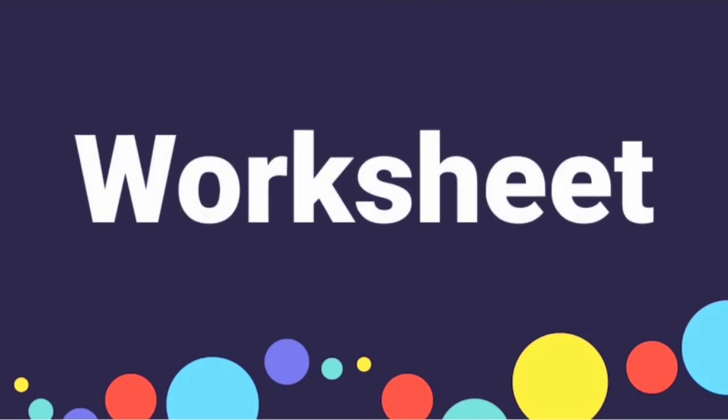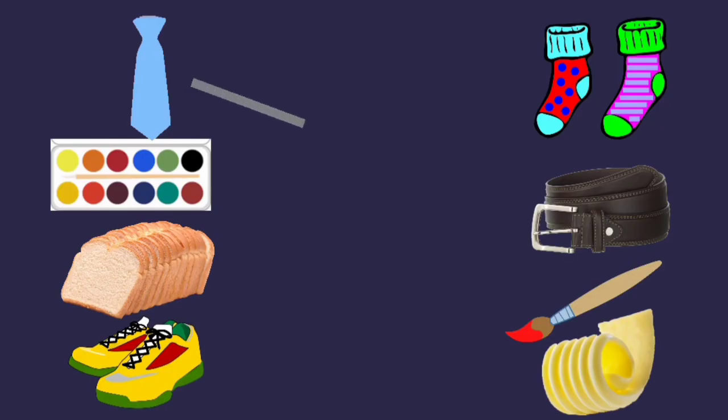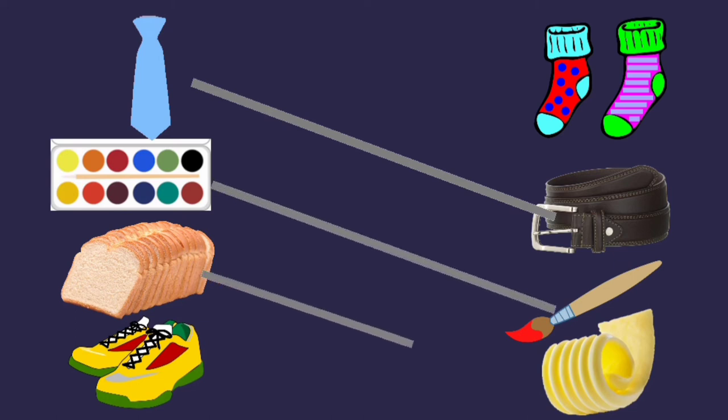Children, now we solve worksheet. Here, tie goes with belt. Paint, brush. Then, bread, butter. And last one, shoes goes to socks.